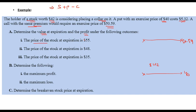Determine the value and profit at expiration. If the stock price is $55: value of stock is $55. The put option (right to sell at $40 when market is $55) is out of the money, so its value is zero. The call option was sold at $50.59 strike — since $55 > $50.59, the call is in the money.